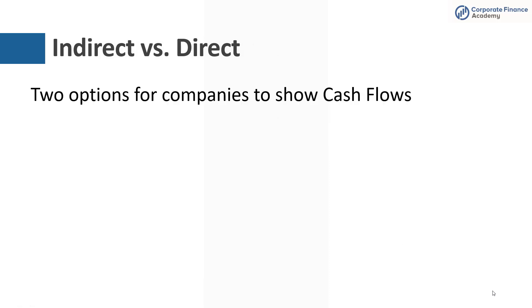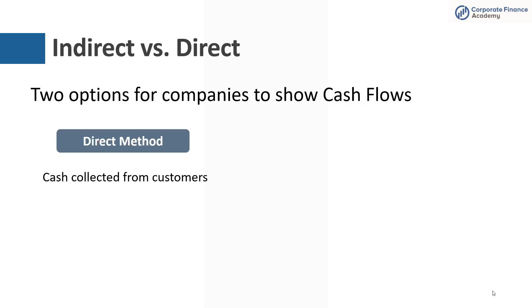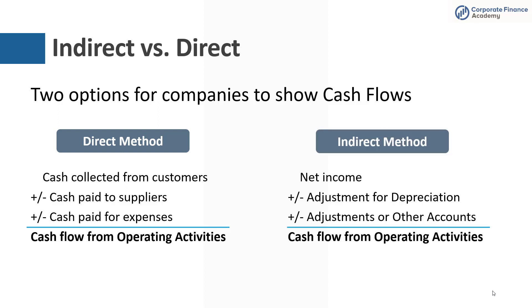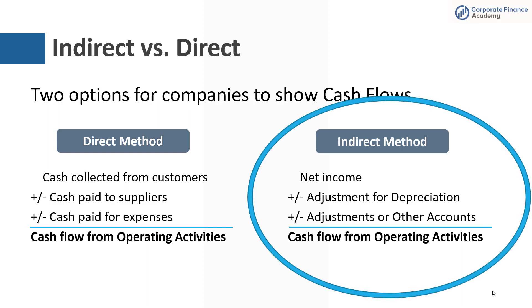Companies have two options for how to show their cash flows: the indirect or the direct method. The direct method is very simple — it looks at cash coming in and cash going out: cash collected from customers, plus or minus what you pay to suppliers, plus or minus expenses, giving you CFOA, cash from operating activities. The indirect method takes net income and adjusts for depreciation and changes in other accounts. The vast majority of public companies use the indirect method. The direct is easier and is probably what you'd use for your own personal cash flows, but with the volume and complexity of transactions for a big business, most companies use the indirect method, which is based off the income statement and balance sheet.